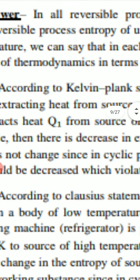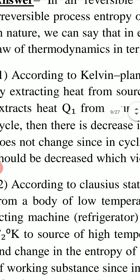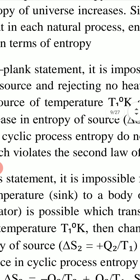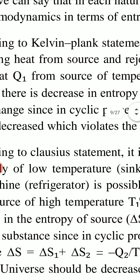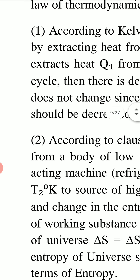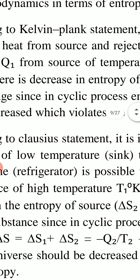In terms of entropy, the second law of thermodynamics states that in each natural process entropy of the universe always increases, because no natural process can be fully reversible. Now we see that both the Kelvin–Planck statement and the Clausius statement are inherent in this new entropy-based statement. We first examine what happens if we assume the Kelvin–Planck statement is wrong.